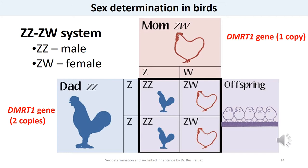The ZZ/ZW mechanism of sex determination is not restricted to birds. Within vertebrates, a similar system has been identified in reptiles as well as in some fishes and amphibians.